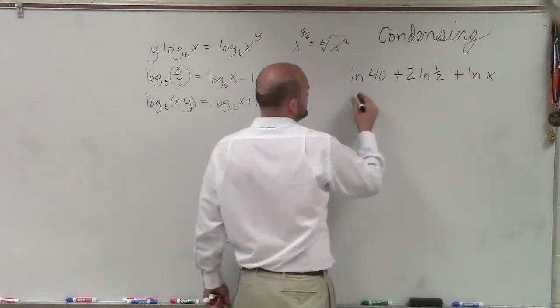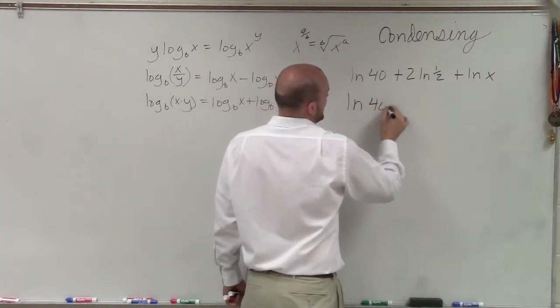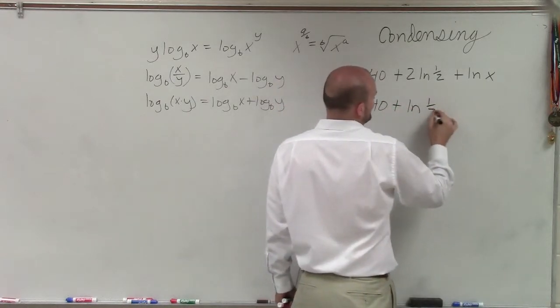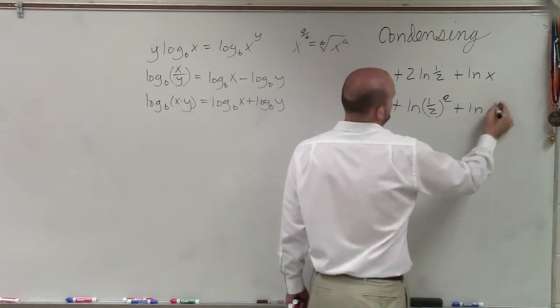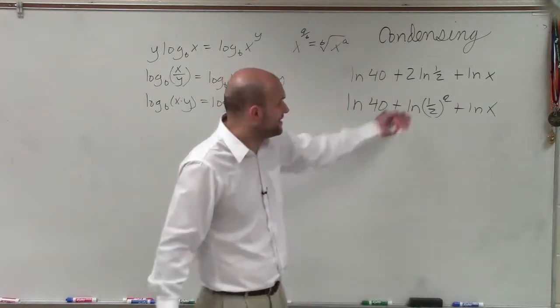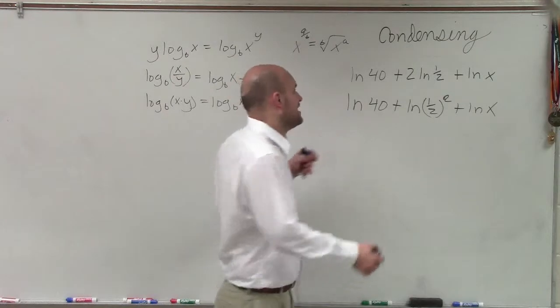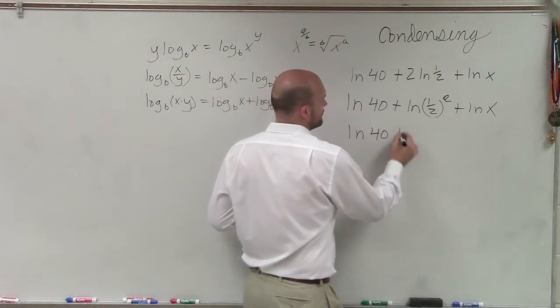The first thing we do is we can take each one of these numbers up in front. A lot of times when we're dealing with condensing, what we're dealing with is expressions that really can't be simplified. But here, I have 1 half squared. So I can rewrite that as ln to the 1 fourth.